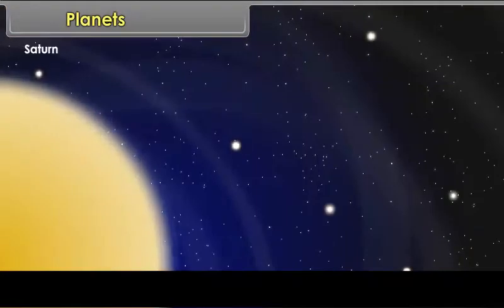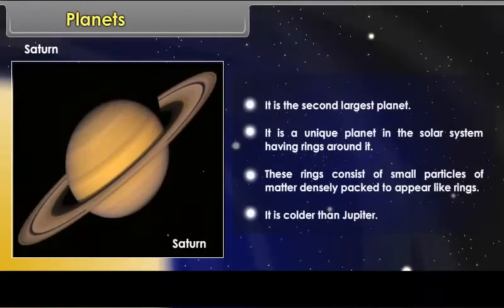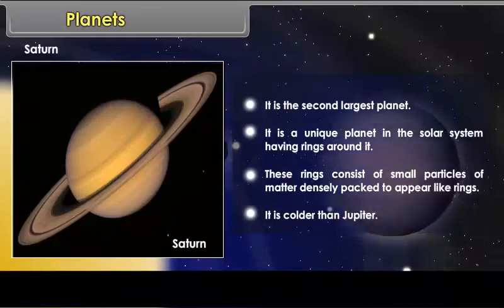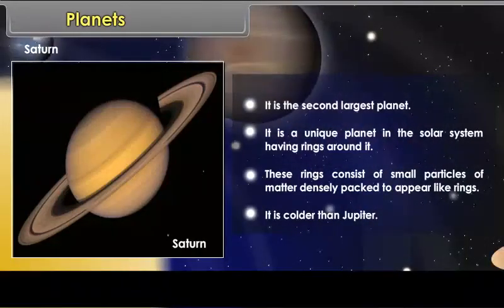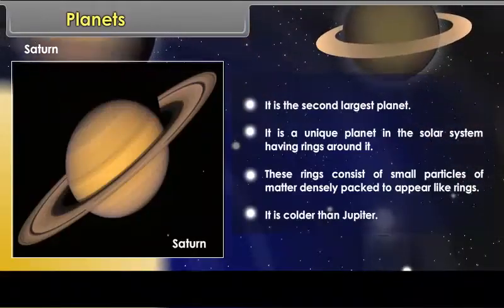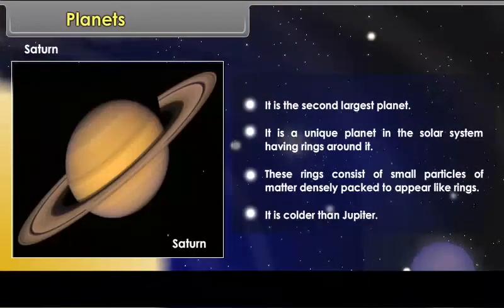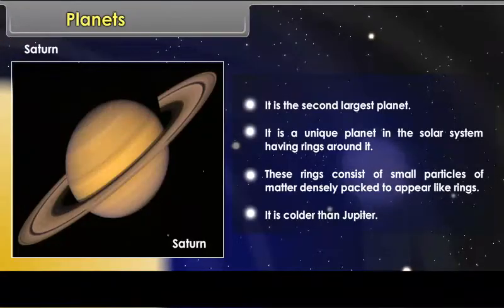Saturn. It is the second largest planet. It is a unique planet in the solar system having rings around it. These rings consist of small particles of matter densely packed to appear like rings.